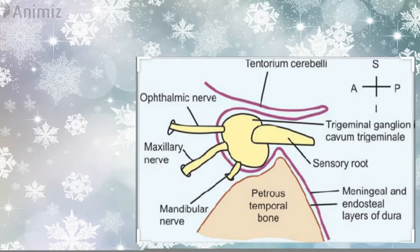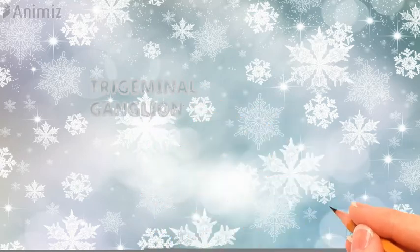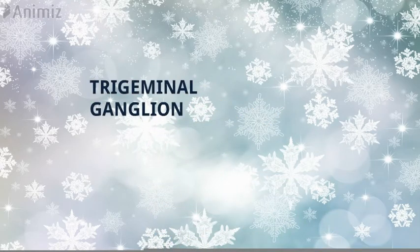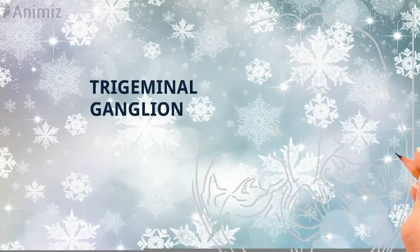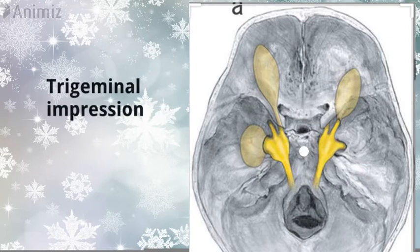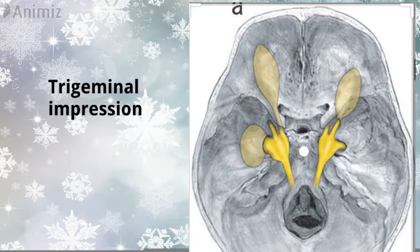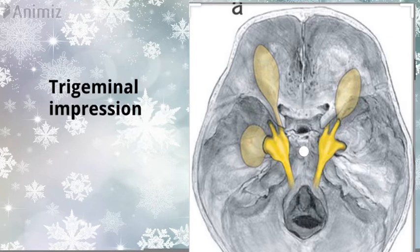The trigeminal ganglion is a large, flat, and crescentic structure. The motor root passes below the sensory root separately and does not join with this ganglion. A ganglion is a group of cell bodies outside the central nervous system. The trigeminal ganglion is a middle cranial fossa structure; it lies on the trigeminal impression of the petrous bone.